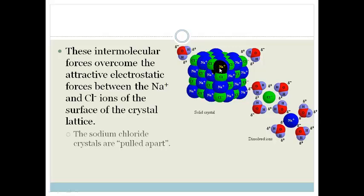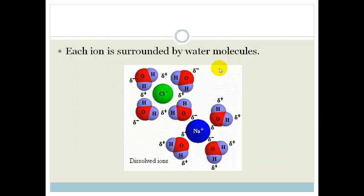So basically what happens is your sodium and chloride crystals are pulled apart. Then what happens is each ion is surrounded by water molecules. You can see here is your negative chloride ion and it's surrounded by the water molecules. But note how the positive hydrogen atoms are facing the negative chloride ion.